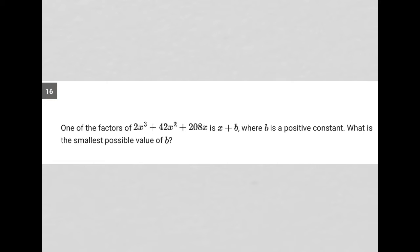So this question says one of the factors of 2x cubed plus 42x squared plus 208x is x plus b, where b is a positive constant. What is the smallest possible value of b?